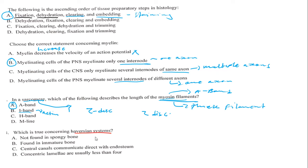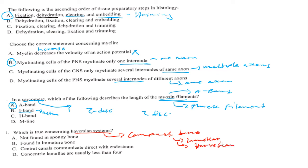The next question asks what is true concerning the Haversian system. The Haversian system is found in compact bone. Key features include the presence of lamellae, the Haversian canal, and osteocytes in lacunae. One important point is that the Haversian system is not found in spongy bone. The answer is A.